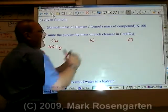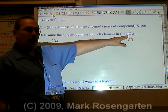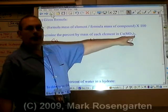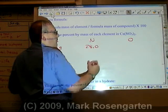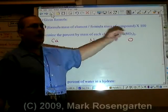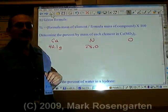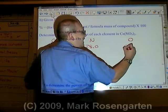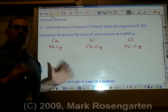Nitrogen weighs 14.0 and there's two of them, so 2 times 14 is 28.0. Oxygen weighs 16.0 each and there's six of them, so 6 times 16 is 96.0. That's the contribution to the formula mass of each element in the compound.